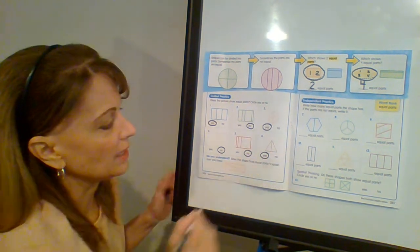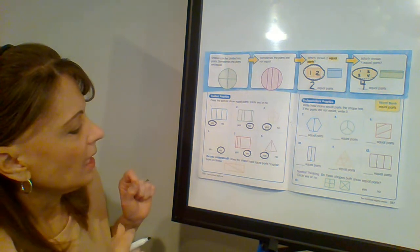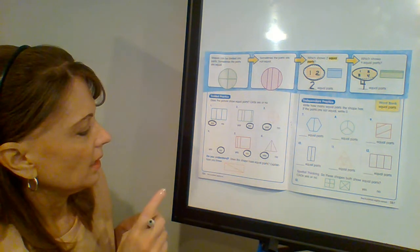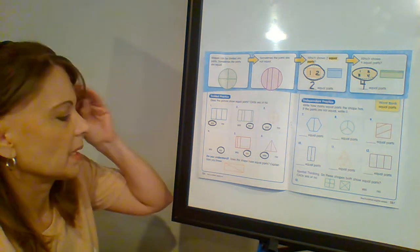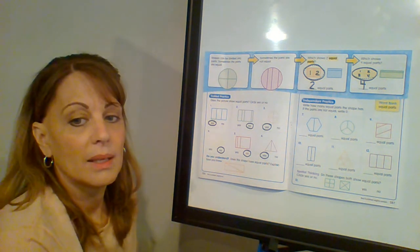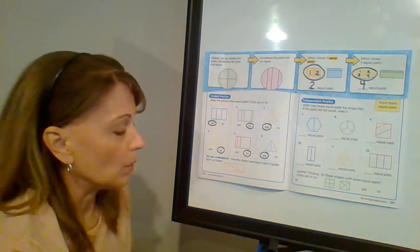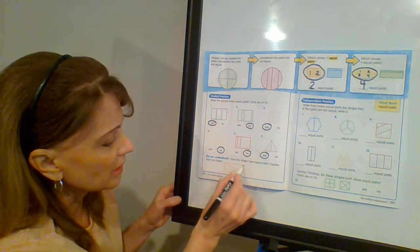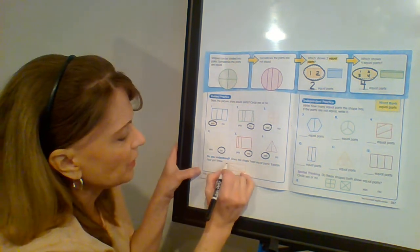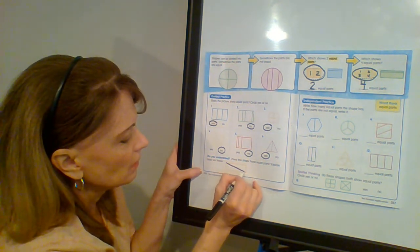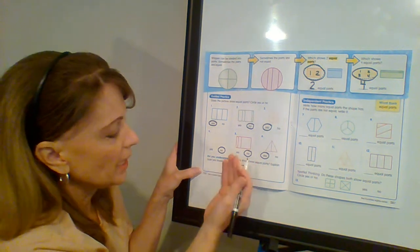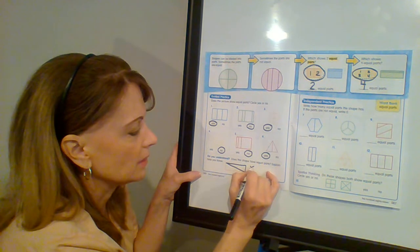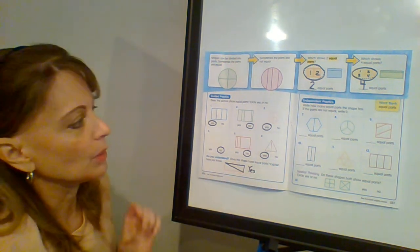How about this one? Does this shape have equal parts? Yes or no? Now, they actually are equal. They are equal. If you cut this piece, if you cut this one, you would have to flip it over, but then it would make exactly that. So yes, they are exactly equal.